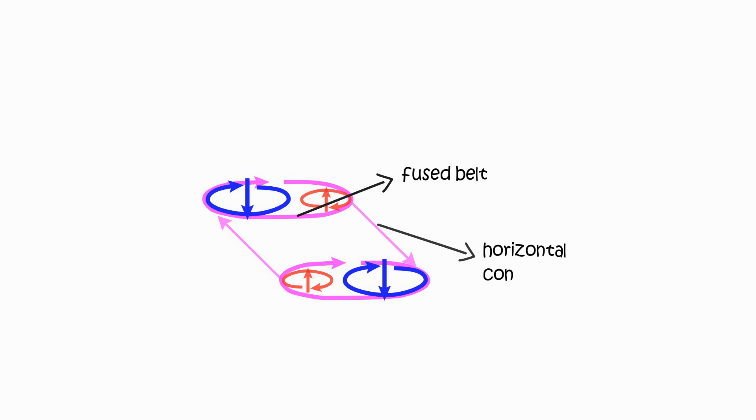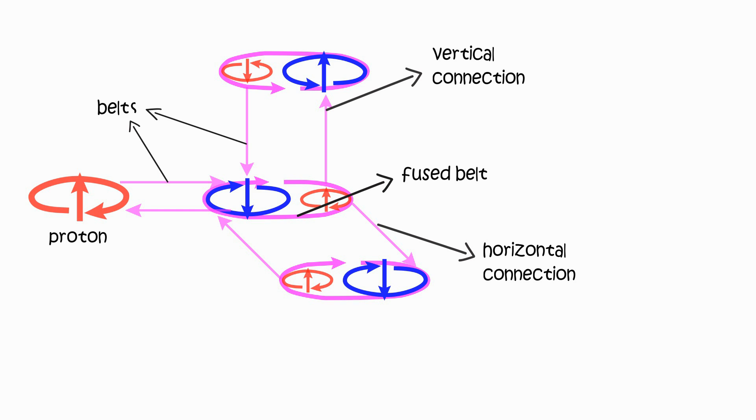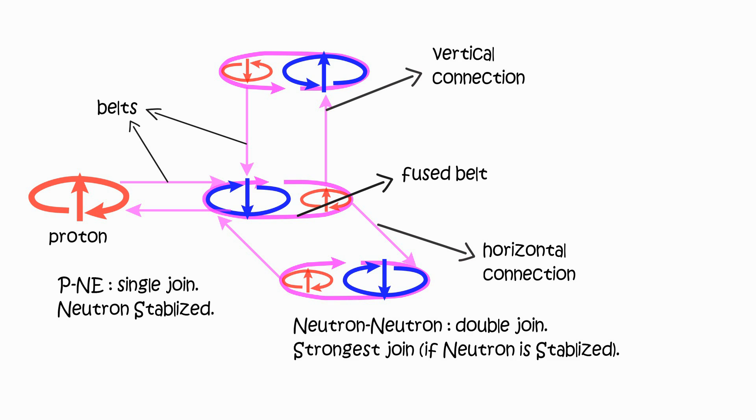When stabilized, neutron to neutron connections are stronger than neutron to proton connections. Because neutron to neutron can double join at N electron and N proton. So neutron forms a cluster of neutrons in the center of the nucleus.